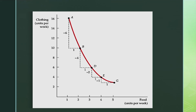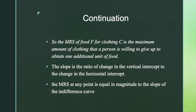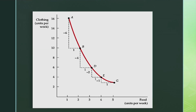At point E, the change in units of clothing is 2 units, i.e. 6 minus 4, and the change in units of food is 1 unit, i.e. 4 minus 3. Here, the MRS will be minus 2 divided by 1, i.e. minus 2 units. At point G, the change in units of clothing is 4 minus 3, i.e. 1 unit, and change in units of food is 5 minus 4, i.e. 1 unit. So the MRS will be minus 1 divided by 1, i.e. 1 unit. The slope of the IC at any point is the change in units of clothing with respect to change in units of food. This is nothing but the marginal rate of substitution. Thus, the MRS at any point is equal in magnitude to the slope of the indifference curve.